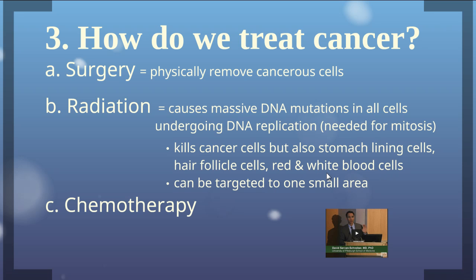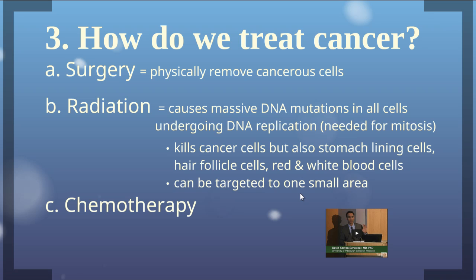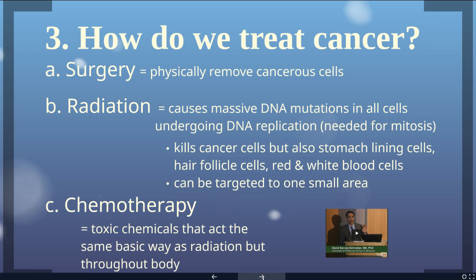One advantage of radiation is that it can be targeted to one small area, so instead of exposing the whole body, you can focus it on a particular region of cancer. Chemotherapy works like radiation, but uses toxic chemicals that move throughout the body — making it more effective for cancers that have spread through the lymph system. Both radiation and chemotherapy are very difficult on the body; you're essentially slowly killing the body while hoping to eliminate the cancer cells and then recover from the side effects.